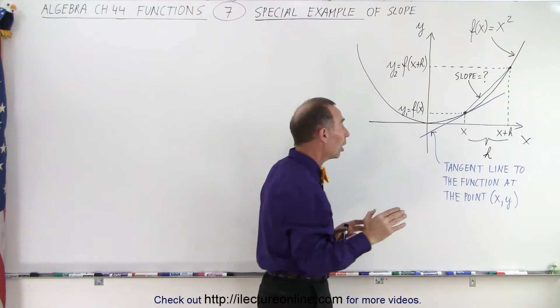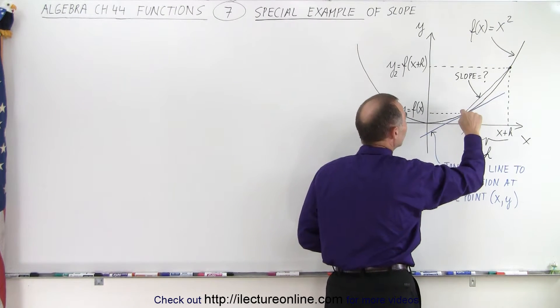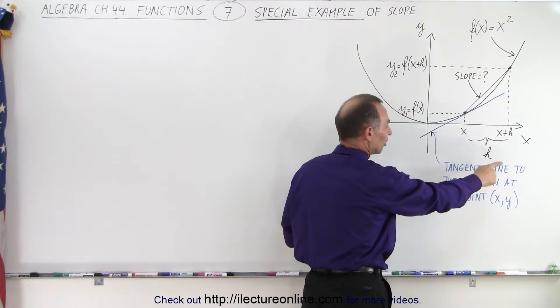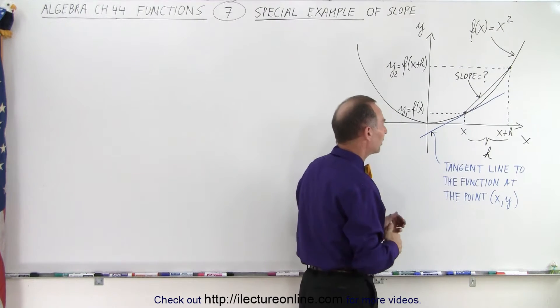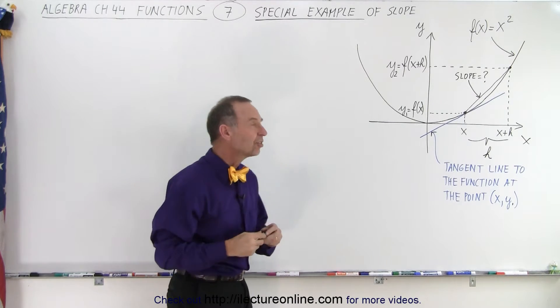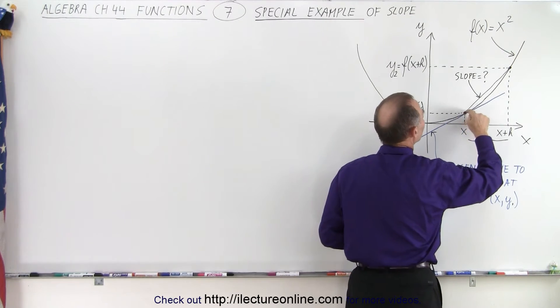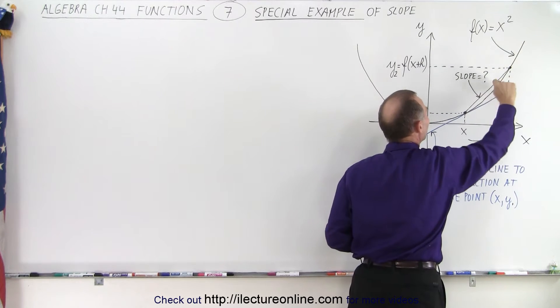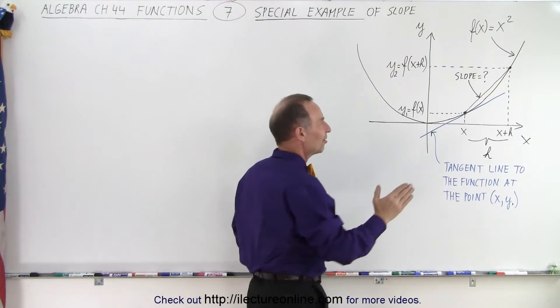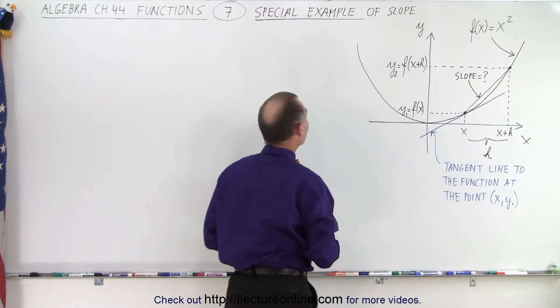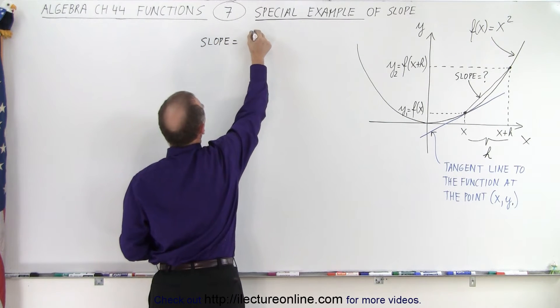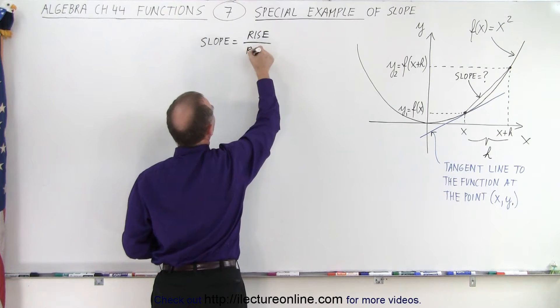I've also drawn in blue color a tangent line, a line that is tangent to the slope at the point x. The tangent line to the function at the point (x, y₁). Now let's calculate the slope of the line that connects the two points. That's this slope right here, which of course is not the same as the slope of the tangent line there. We simply want to find the slope of that line. And of course, we know that the slope is equal to the rise divided by the run.